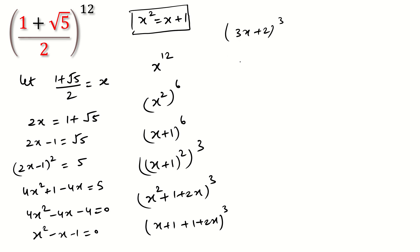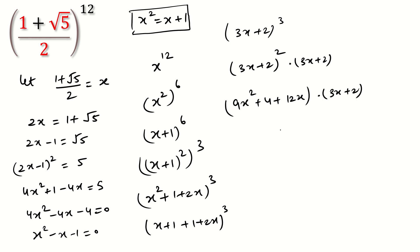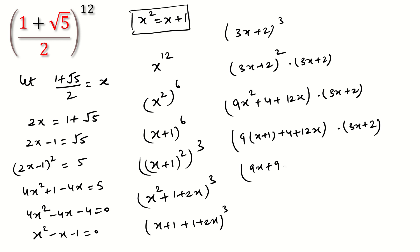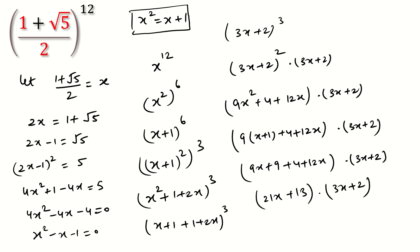We expand (3x + 2)^3 as (3x + 2)² × (3x + 2). Expanding (3x + 2)² gives 9x² + 12x + 4. Substituting x² = x + 1, we get 9(x + 1) + 12x + 4 = 21x + 13. So the expression becomes (21x + 13)(3x + 2).